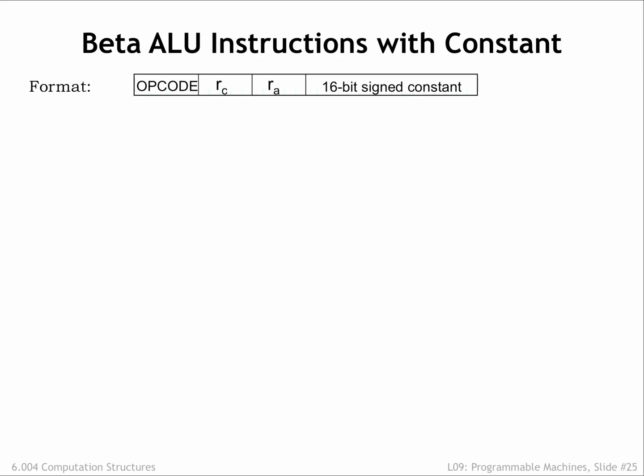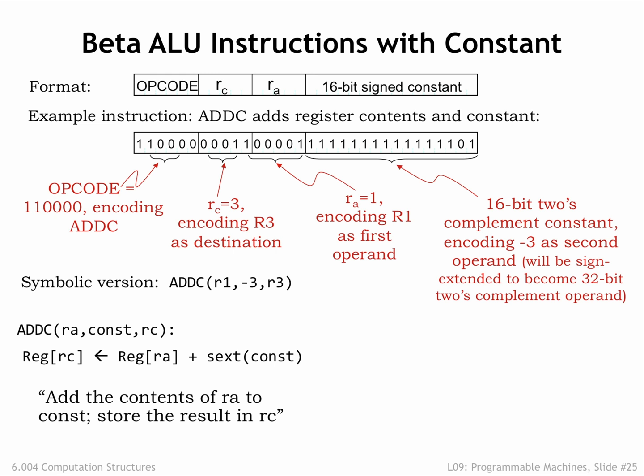Feature request approved! Here we see the second of the two beta instruction formats — a modification of the first format where we've replaced the 5-bit RB field with a 16-bit field holding a constant in 2's complement format, allowing us to represent constant operands in the range 0x8000 to 0x7FFF. Here's an example of the ADD CONSTANT instruction, which adds the contents of R1 and the constant minus 3, writing the result into R3. The second operand in the symbolic representation is now a constant, or more generally an expression that can be evaluated to get a constant value.